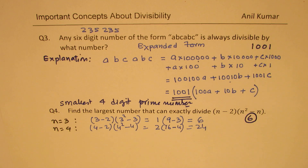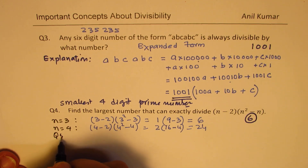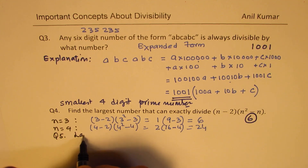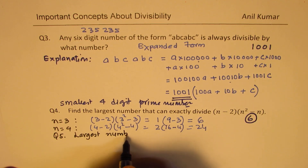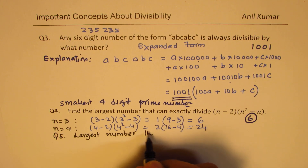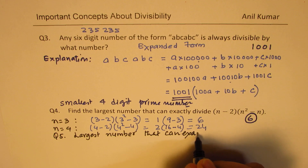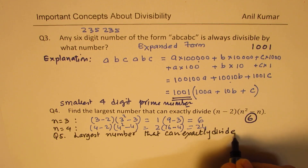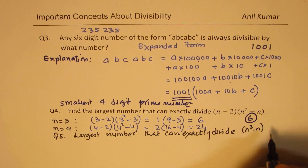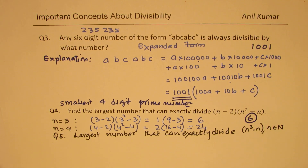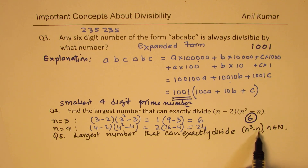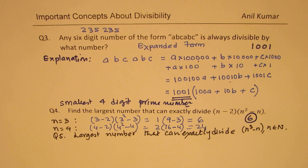Here's a bonus question number 5: find the largest number that can exactly divide n³ − n, where n belongs to the natural numbers. Again, substitute a value — don't use n = 1 as it gives zero; use n = 2 and get your answer. That's the strategy for solving such questions. Feel free to write your comments, share your views, and if you like and subscribe to my videos, that'd be great. Thanks for your time and all the best!